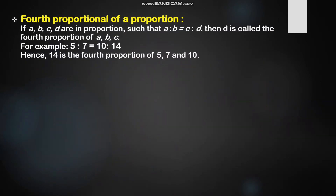The next definition is fourth proportional. If A, B, C, D are in proportion such that A ratio B is proportional to C ratio D, then D is called the fourth proportional. In the example 5 ratio 7 proportional to 10 ratio 14, the number 14 is the fourth proportional.